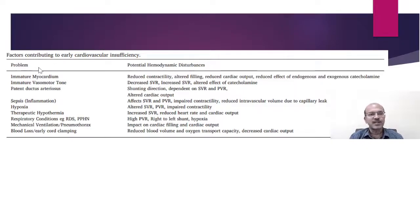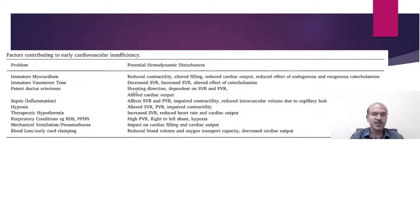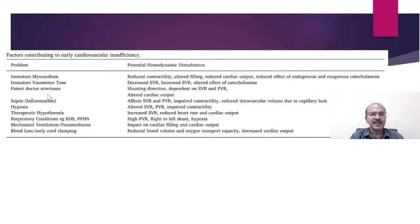There are many factors contributing to early cardiovascular insufficiency: immature myocardium, reduced contractility, altered filling, reduced cardiac output, and reduced effect of endogenous and exogenous catecholamines. Immature vasomotor tone and autoregulation are also affected, leading to decreased or increased systemic vascular resistance. The catecholamine response is altered in the premature baby — that is one of the reasons why hydrocortisone might help. Patent ductus arteriosus contributes by nature of the shunt and depends on systemic and pulmonary vascular resistance. In PPHN, increased pulmonary vascular resistance causes right-to-left shunting.